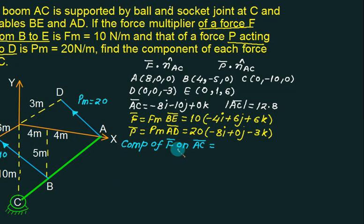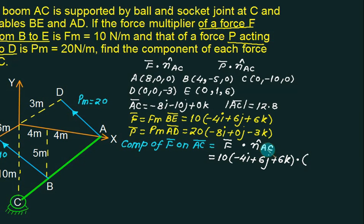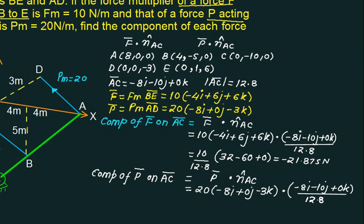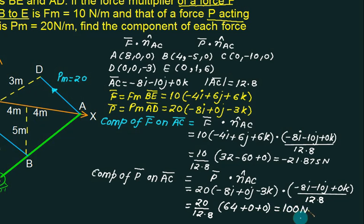For the first component: component of F bar on AC means dot product of F bar with unit vector AC. Unit vector AC equals AC bar divided by mod of AC, which is (−8i − 10j + 0k) divided by 12.8. Substituting and computing: 20 divided by 12.8, with 8 times 8 = 64, giving the final answer.